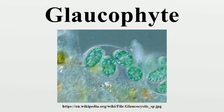Glaucophytes have mitochondria with flat cristae, and undergo open mitosis without centrioles. Motile forms have two unequal flagella, which may have fine hairs and are anchored by a multi-layered system of microtubules, both of which are similar to forms found in some green algae.